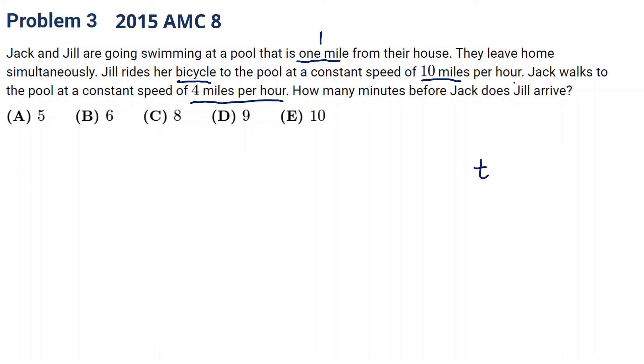So we are looking for their time difference. Let's say Jack, for Jack, then Jill. For Jack, the distance for both of them is one. And the speed for Jack is, Jack walks, Jack is 4 miles per hour, and Jill is 10. Let's write down the formula. Speed equals distance divided by time, so time is distance divided by speed. Time for Jack is one-fourth hour. Time for Jill is one-tenth hour. And we are looking for the time difference in terms of minutes. So one-fourth hour is 15 minutes, one-tenth hour is six minutes.